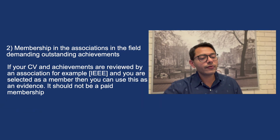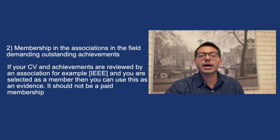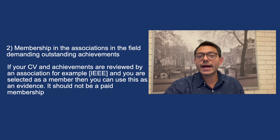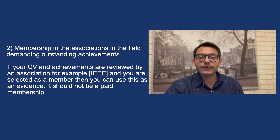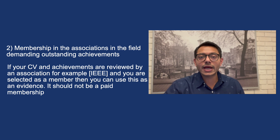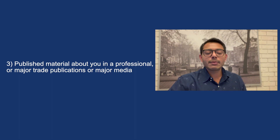The second criteria is evidence of membership in associations in the field demanding outstanding achievements. For example, in my field of bioinformatics there's an association called ISCB — the International Society of Computational Biology — or in your field it could be IEEE for engineers. To fulfill this criteria, it should not be a paid membership; it should be when the society has reviewed your CV, your qualifications, and your achievements, and then invited you as a member. If that is how you became a member, you can submit that as evidence to fulfill this criteria.